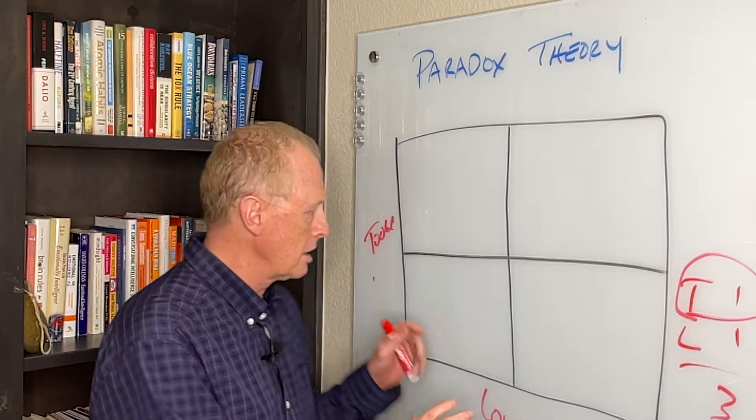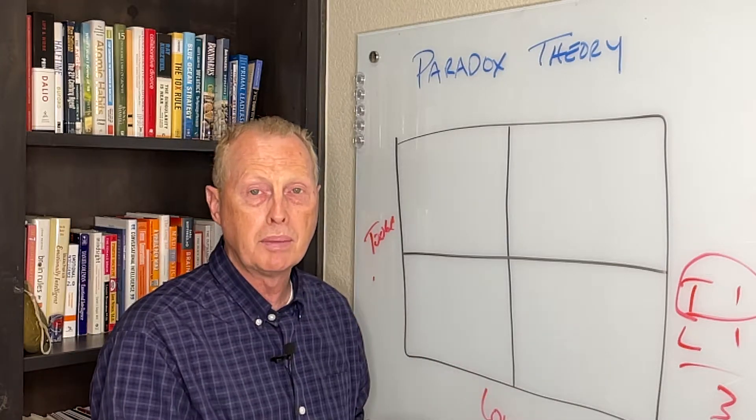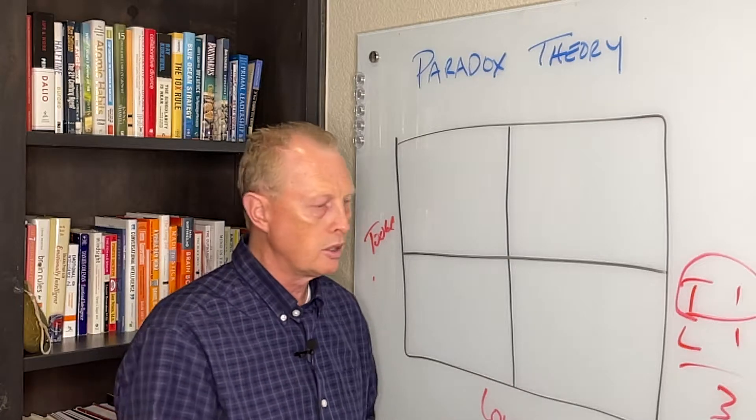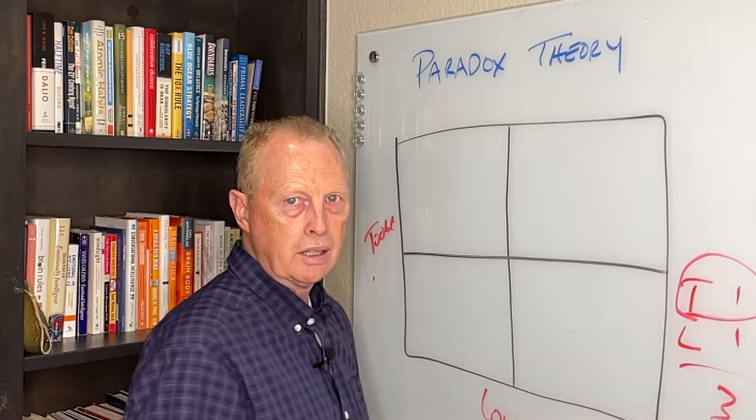So what happens here is because neither trait is being complemented by the other, there's our paradox. We don't have three points, we only have one point.